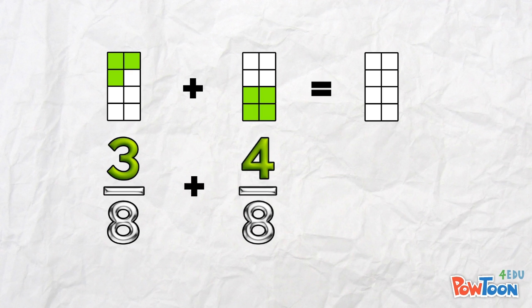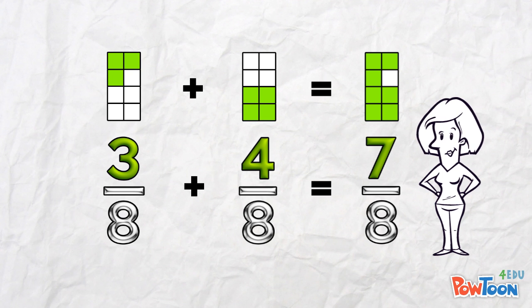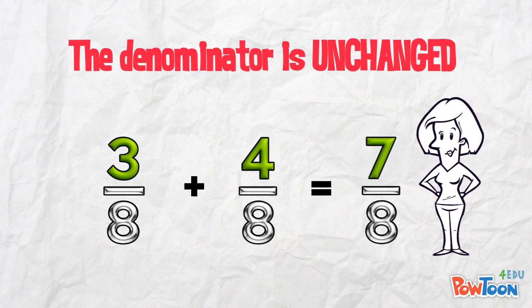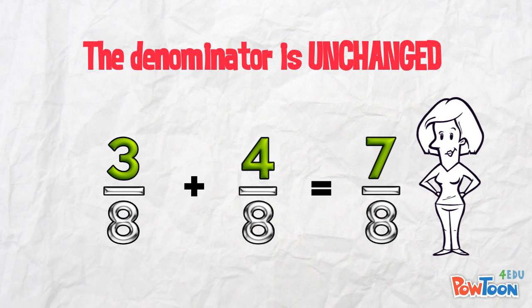3 plus 4 is 7 parts out of 8. If I remove the model and we just focus on the fractions, you can see the denominator is unchanged. It stays as parts out of 8.